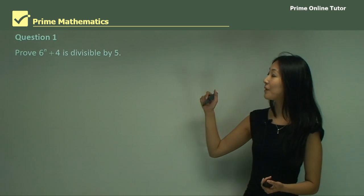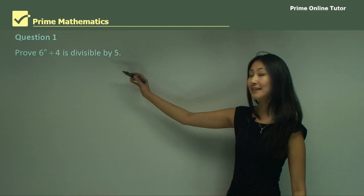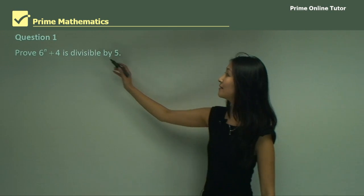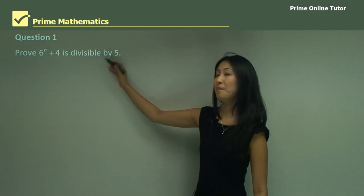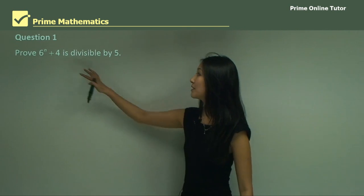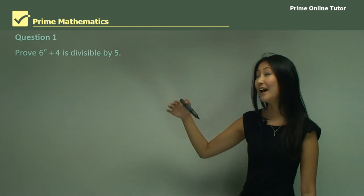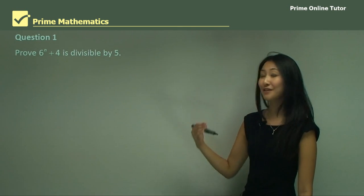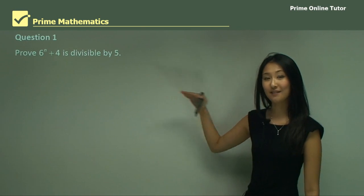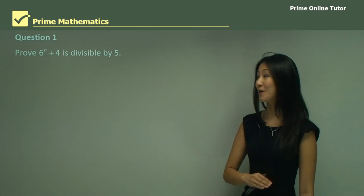In question one we want to prove that six to the power of n plus four is divisible by five. The idea is we want to somehow prove that this is divisible by five, and we still want to follow the same process of mathematical induction as we did in the previous module.